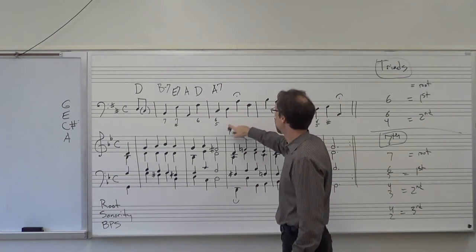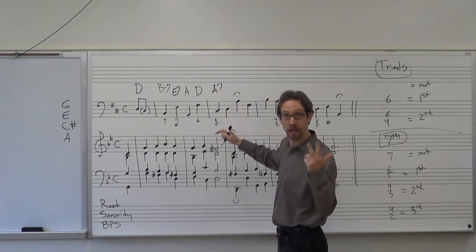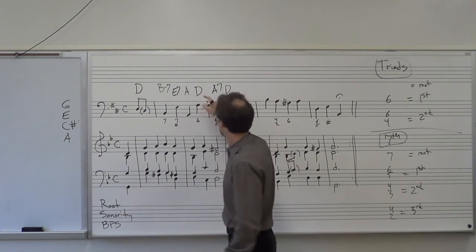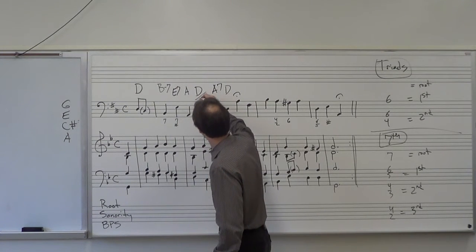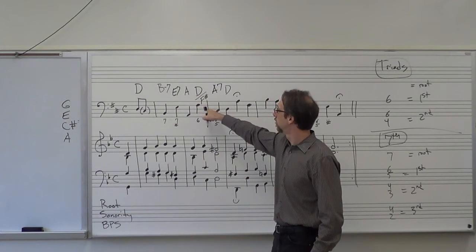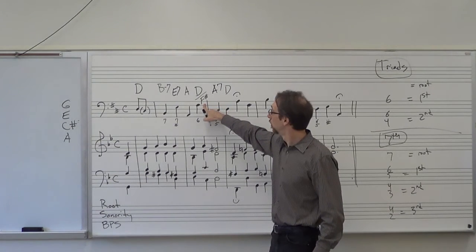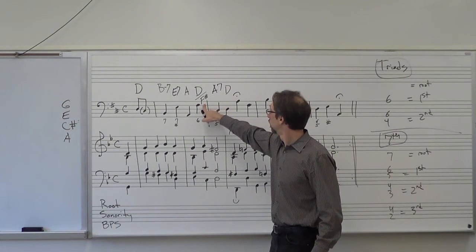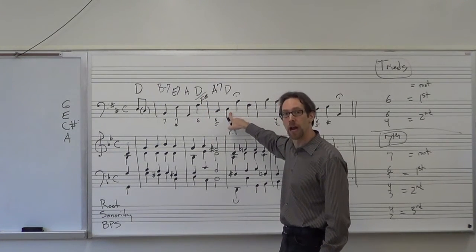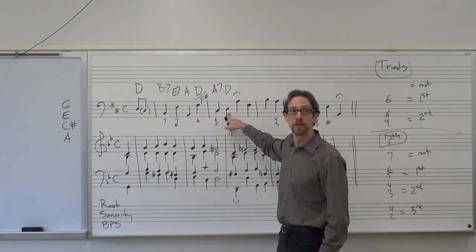Here I have a D with nothing underneath it — root position triad: D, F sharp, A, a D major triad. I made a little mistake here: I did not indicate the inversion. I want to indicate the inversion by putting a slash and the F sharp. So this is a D major triad with F sharp in the bass, and this other one is a D major triad with D in the bass — same notes, different inversion.